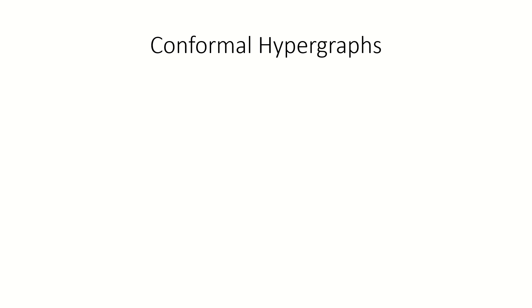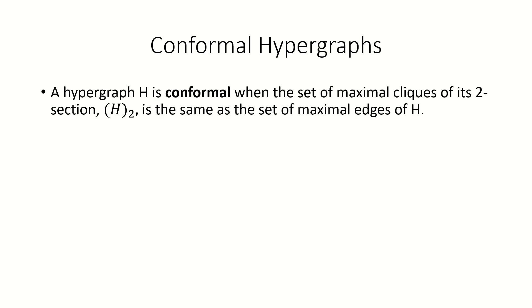Today we're going to talk about conformal hypergraphs. For simplicity, we'll consider only hypergraphs that do not have repeated edges, allowing us to define the collection of edges of a hypergraph as a set of sets. A hypergraph is conformal when the set of maximal cliques of its two-section is the same as the set of its maximal by inclusion edges.